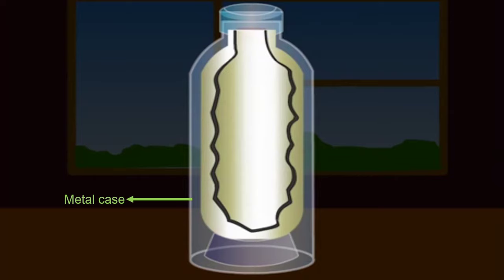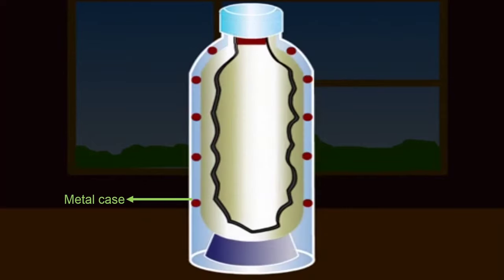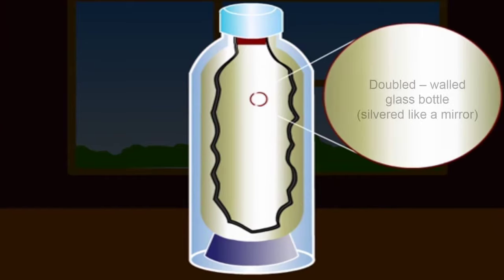Glass is chosen as the material for making thermos flask because it is a bad conductor of heat. There is an insulating material in between the metal container and glass bottle. The surface of double-walled glass bottle is silvered like a mirror.